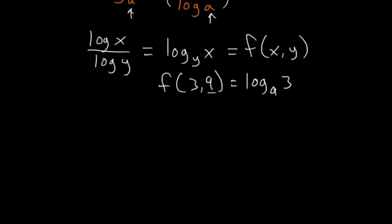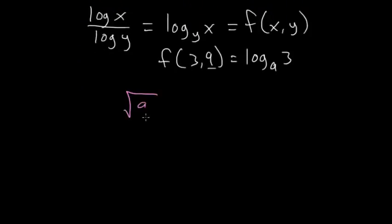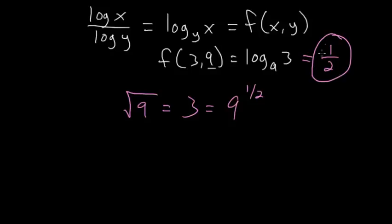And we know that if you take a square root of 9, that you get 3. Or in other words, 9 to the 1 half power is equal to 3. So this logarithm is just equal to 1 half, and 1 half is our final answer.